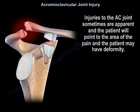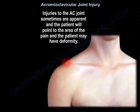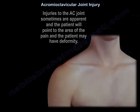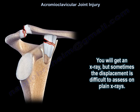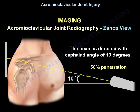Injuries to the AC joint are often apparent — the patient will point to the area of pain and may have a visible deformity. You will get an X-ray, but sometimes displacement is difficult to assess on plain X-ray. The Zanca view may be helpful — the beam is directed with a cephalad angle of 10 degrees using 50% penetration.